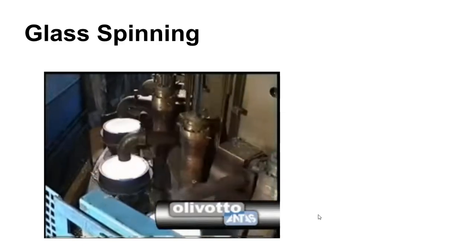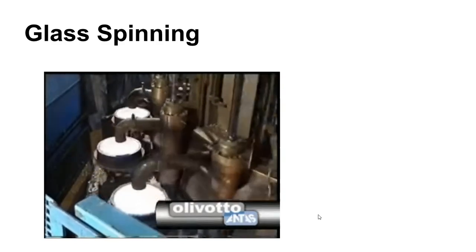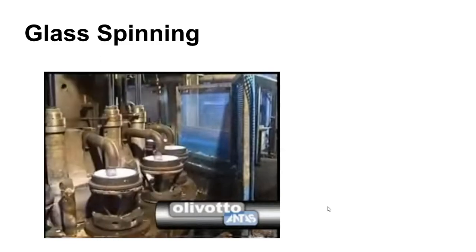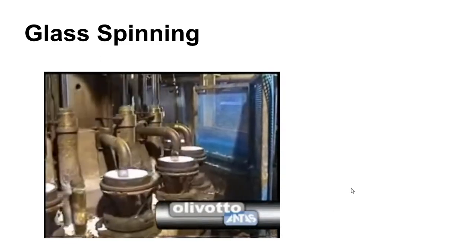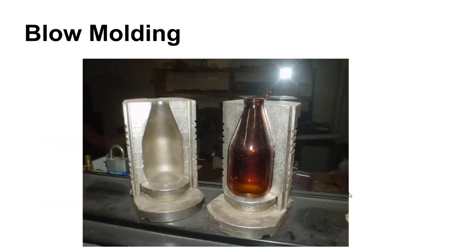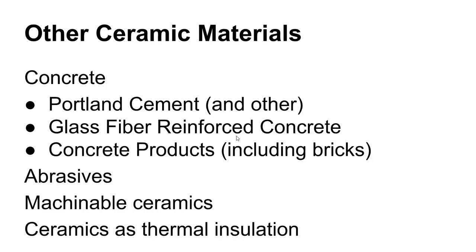Centrifugal force can also be used to spin glass into shape, similar to semi-centrifugal casting of metal. Additionally, many glass bottles are made by blow molding — a process similar to blow molding of plastics.